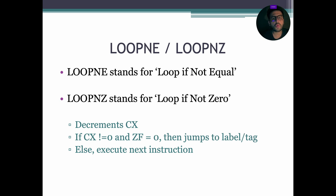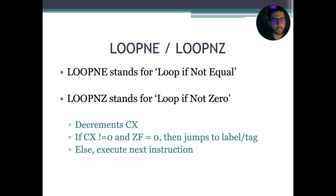Similarly, LOOPNE stands for loop-if-not-equal and LOOPNZ stands for loop-if-not-zero. The system first decrements CX, then checks if CX is not equal to 0 and the zero flag status is 0. If both conditions are met, it jumps to the label and continues looping; otherwise the system exits the loop and executes the next instruction.